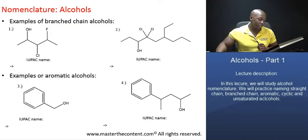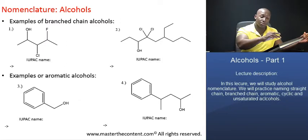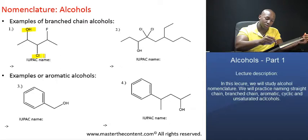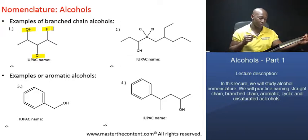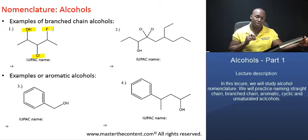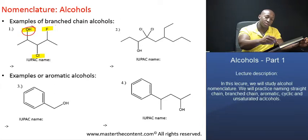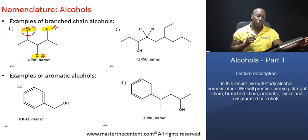The examples on this page are a little bit more interesting because we have multiple functional groups in the structures of these molecules. Directing your attention to the top left-hand corner of the screen, in this case we have three functional groups: a hydroxyl group, a chlorine atom, and a fluorine atom. Knowledge of orders of priority becomes important here — if you understand basic organic chemistry nomenclature, you will know that the hydroxyl group takes precedence over the halogens in naming. So those two halogens, chlorine and fluorine, will be treated as substituents.